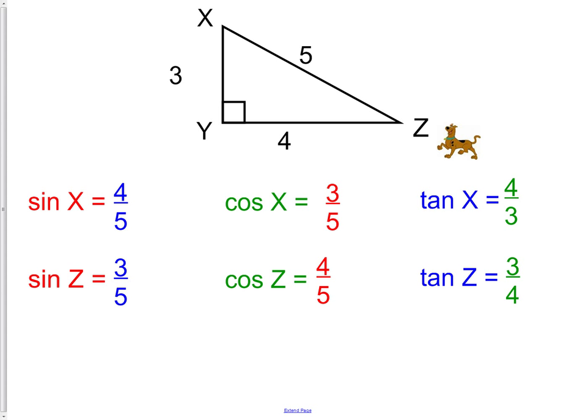These are just ratios, and they never change. They are always going to be the same. Sine, opposite over hypotenuse. Cosine, adjacent over hypotenuse. And tangent, opposite over adjacent.